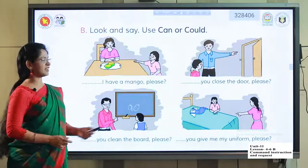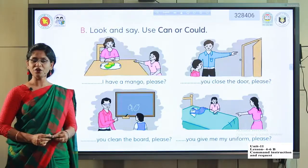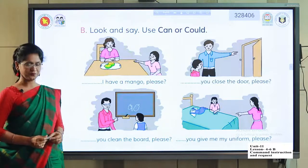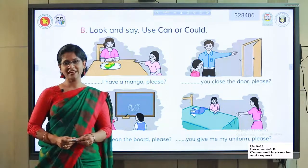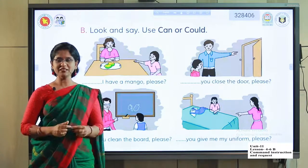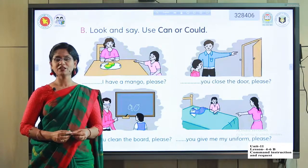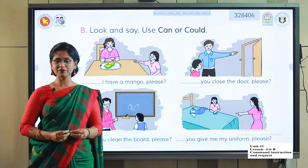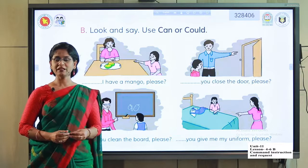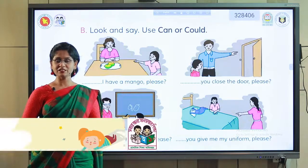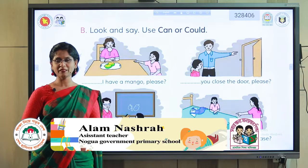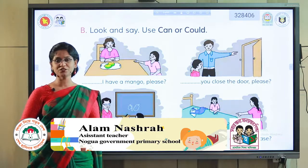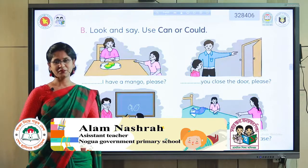Now you have to write these sentences in your notebook as homework. Okay, now the review. If I want something, I use 'Could I have?' And if I want to do something — how to convert an instruction into a request — that is 'Could I?' and then you have to use 'please'.